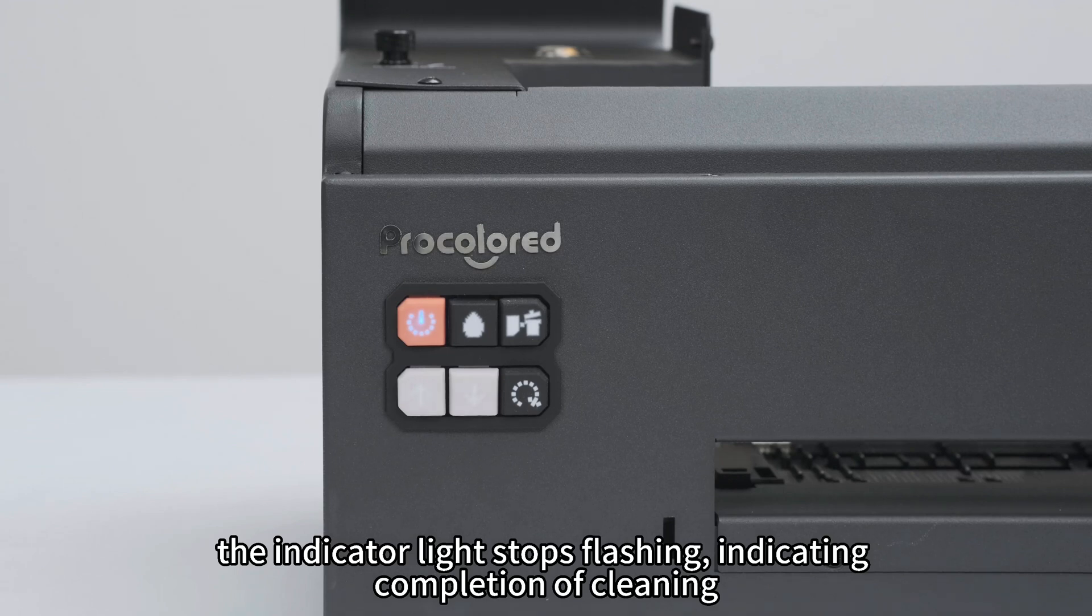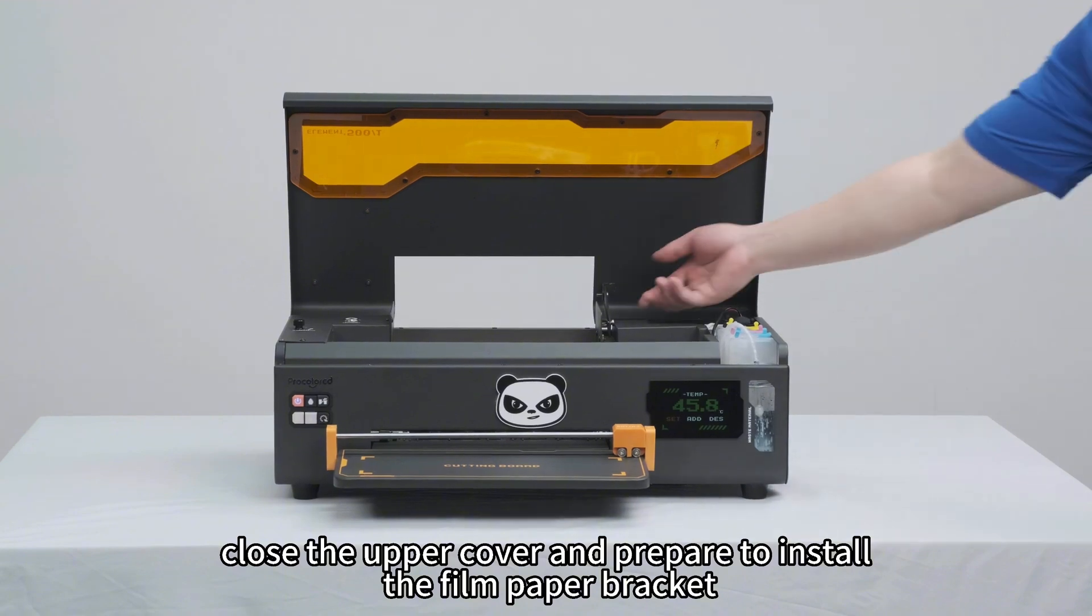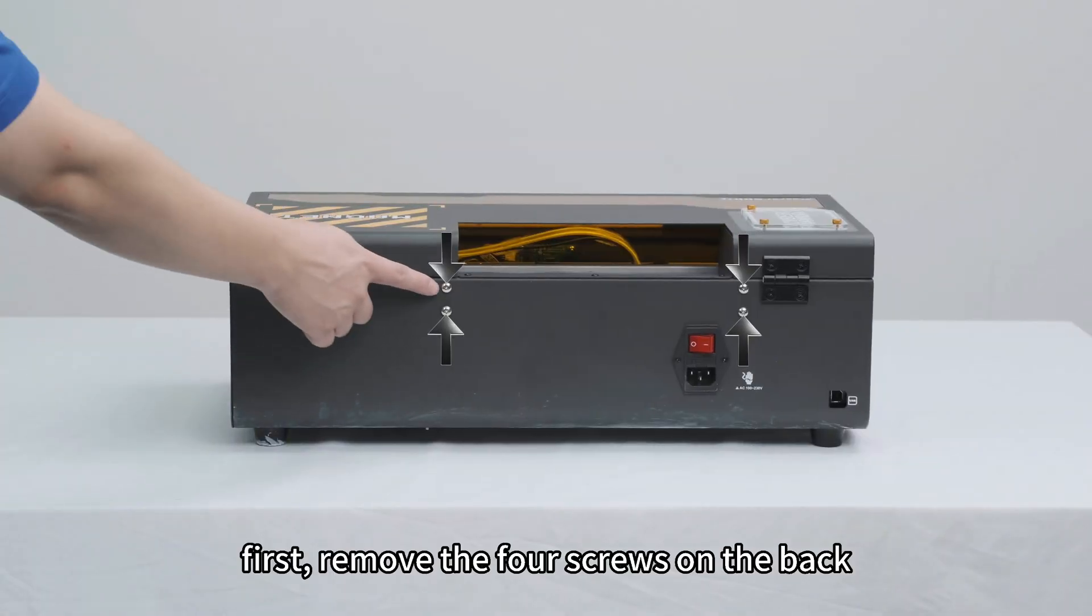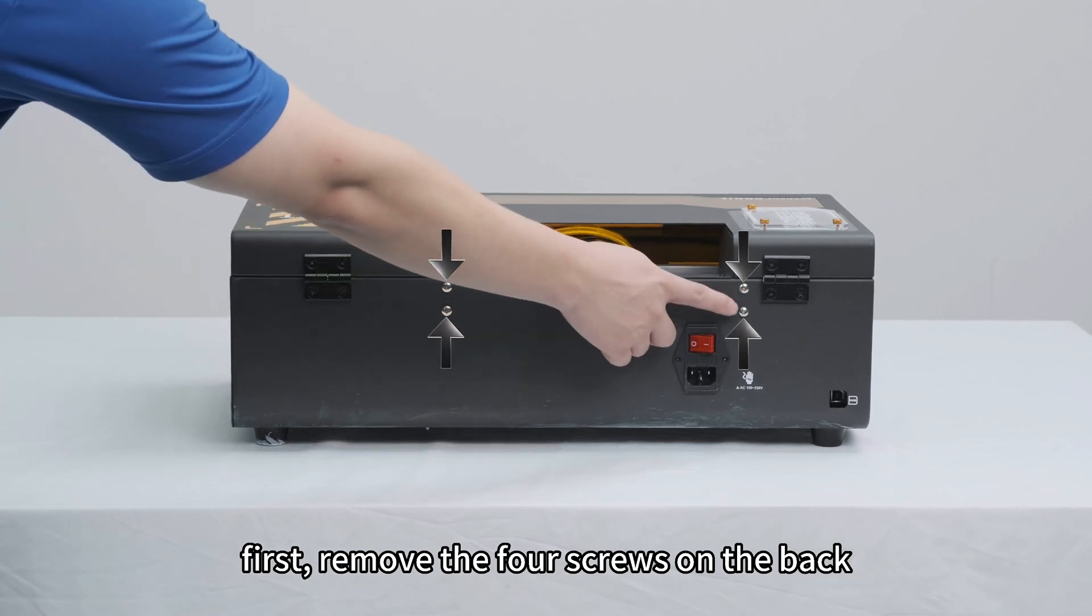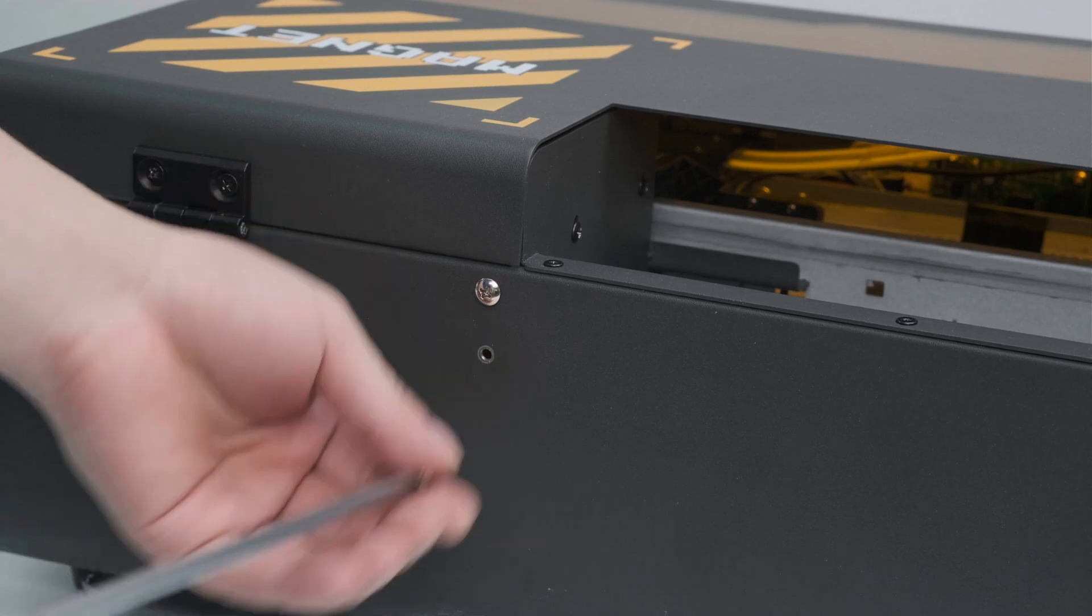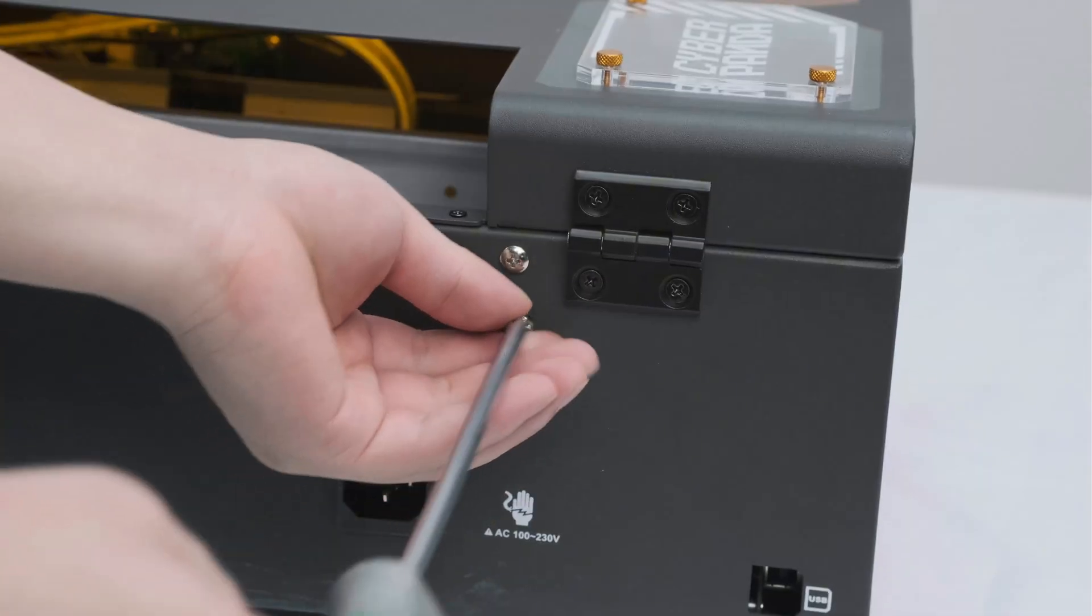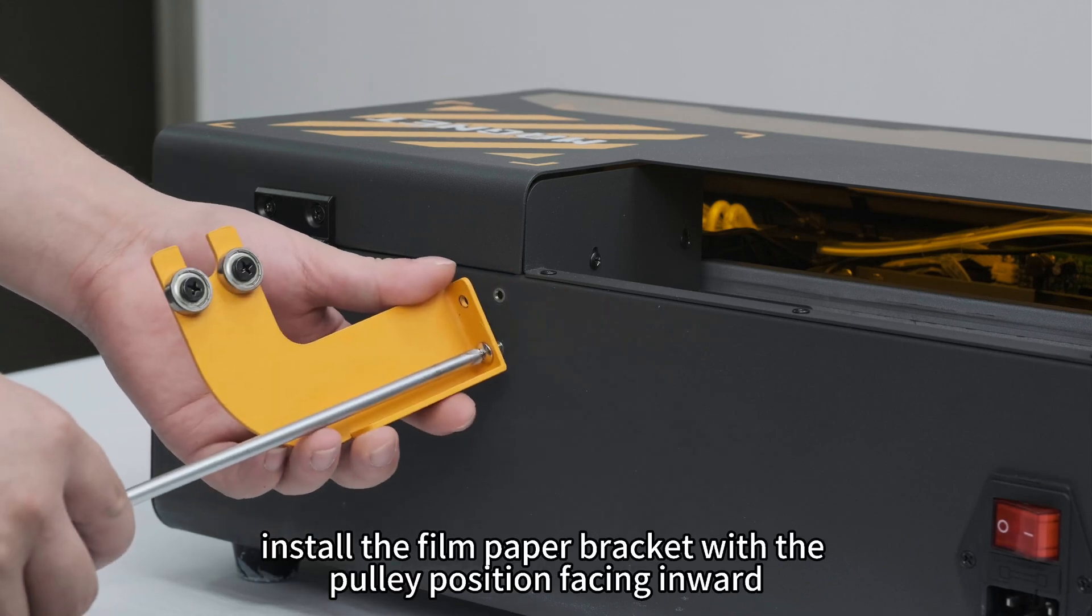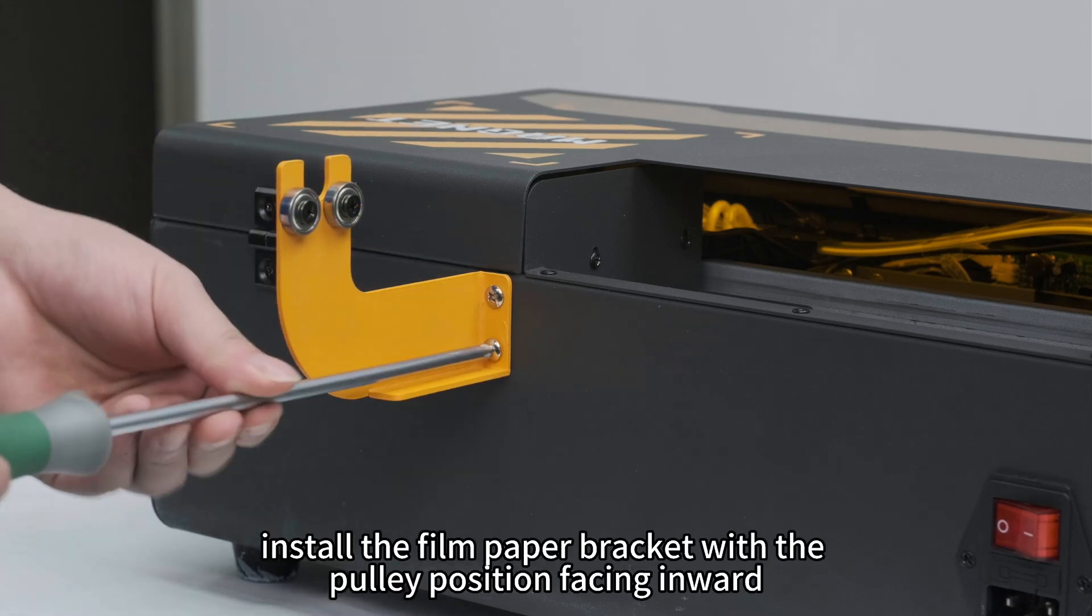Close the upper cover and prepare to install the film paper bracket. First, remove the four screws on the back. Install the film paper bracket with the pulley position facing inward.